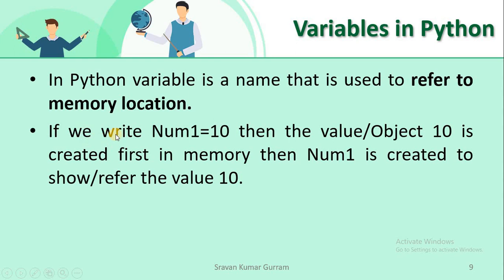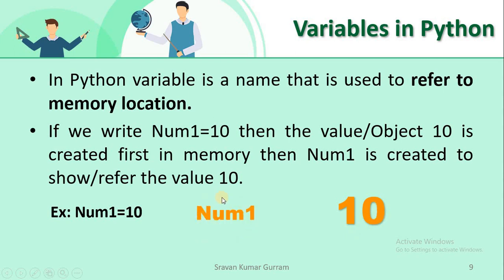For better understanding, consider the example: 'number_one = 10'. In Python, first the object (value) 10 is created — values like integers, floats, and strings are considered objects in Python. Then the name 'number_one' is created, and a reference is created from number_one to the object 10. So number_one is referring to the value 10. This is how the variable concept is implemented in Python.